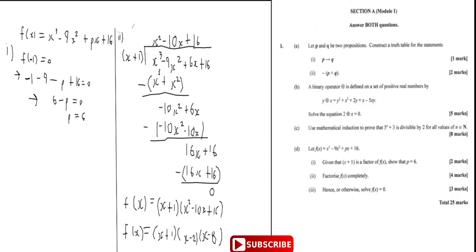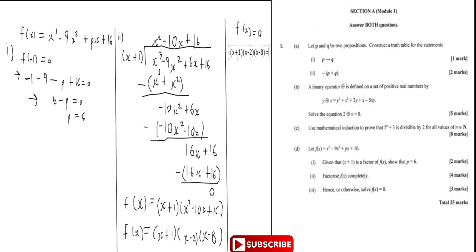Part three says: hence solve f of x equals zero. Solving f of x equals zero means finding the roots, and since it says 'hence', we just use the factors we have. So x plus one times x minus two times x minus eight equals zero, giving x equals negative one, or x equals two, or x equals eight. That's part three — three marks — and that takes care of question one.